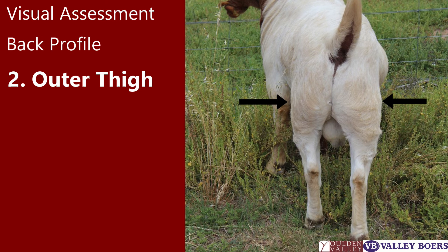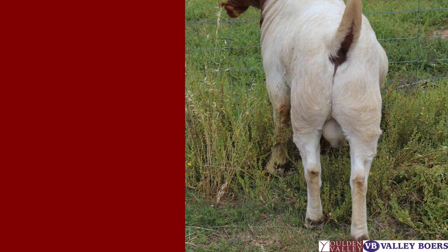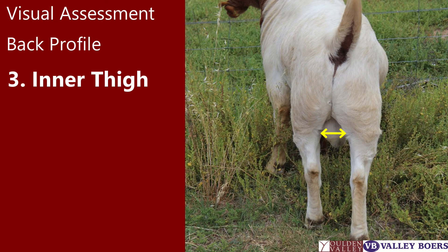You should be able to see the outer thigh muscle — otherwise called the twist — running down the leg. It should not be flat and empty. The inner thigh should be full and well fleshed. Many goats lack muscling in the inner and outer thigh.